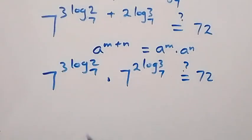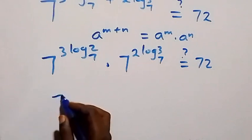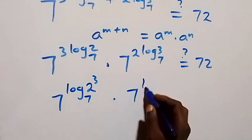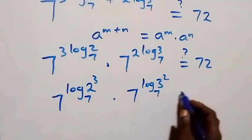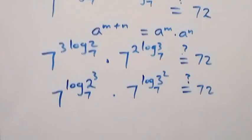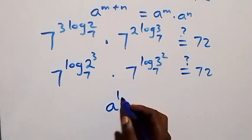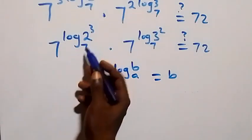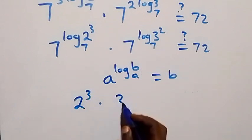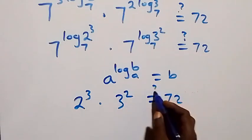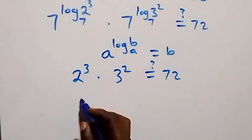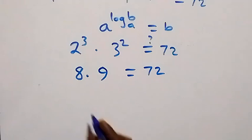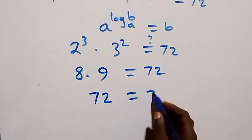Bringing the coefficients back up using the power law, we have 7 raised to power log₇(2³) times 7 raised to power log₇(3²) equals 72. Using the logarithm identity a raised to power log_a(b) equals b, this gives 2 raised to power 3 times 3 raised to power 2 equals 72 — that is 8 times 9 equals 72, which confirms 72 equals 72.